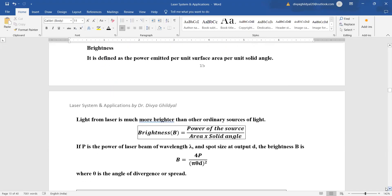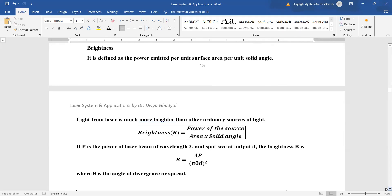Brightness, it is defined as the power emitted per unit surface area per unit solid angle. So light from laser is much more brighter than your ordinary light and brightness formula is given by power of the source upon area into solid angle. So if P is power of laser beam of wavelength lambda spot size at an output D and the brightness B is given by 4P upon pi theta D whole square where theta is angle of divergence or spread.